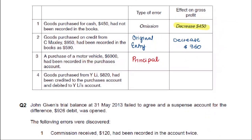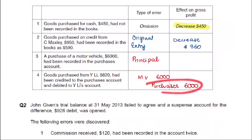If we correct it, we debit motor vehicle and credit purchases — cutting the purchases by $6,000. When purchases are reduced, our expenses decrease. What will happen to the profit? It will grow — profit will increase by $6,000.